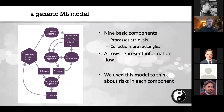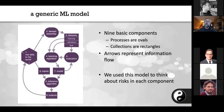In order to do our work, we didn't want to focus on one particular machine learning model. We wanted to genericize machine learning and think about the risks associated with different components. We built a generic model in purple to think about risks in every component and identified nine basic components. Processes are ovals, collections of data are rectangles, and arrows represent information flow — raw data flows up to dataset assembly, which produces training, validation, and testing sets.